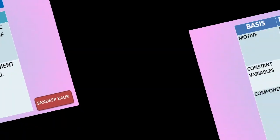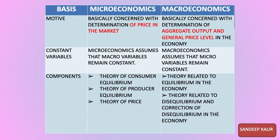Coming to the next point — the motive of micro and macroeconomics. Microeconomics is concerned with the determination of price in the market; due to this it is also called the theory of price determination, because in this we determine the price of a commodity. On the other side, macroeconomics is concerned with the determination of aggregate output, aggregate supply, aggregate demand, and the overall general price level in the economy.